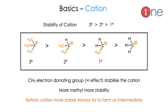Before we get into that, let us see what a carbocation is. Tertiary cation is stable. Why? Because it is attached with CH3 groups, which are electron-donating groups with a positive inductive effect. They donate electrons and neutralize the charge, stabilizing the positive ion. More methyl groups means more stability. Hence: tertiary (attached to 3 carbons) is most stable, then secondary, then primary, then methyl. Tertiary systems are more stable and always preferred as intermediates in reactions.